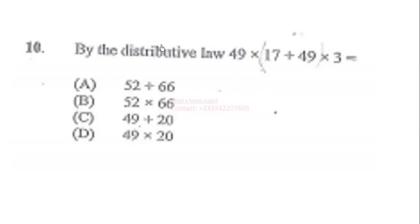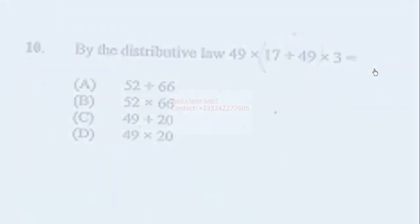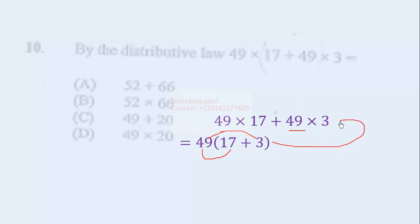Number 10. By the distributive law, 49 times 17 plus 49 times 3 equals... Let us factor a common factor, which is 49 out. That will give us 49 into 17 plus 3. So that's the distributive law. If you simplify 17 plus 3, you get 20. So the correct answer is 49 times 20.